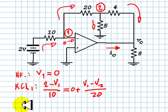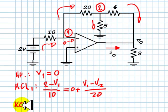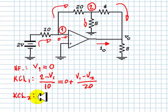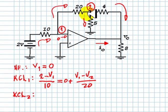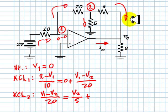KCL for node number 2. Current going in: V1 minus V2 over 20. And that is equal to currents coming out of the node, which are this one, V2 over 5, and this other one, V2 minus V0 over 4.